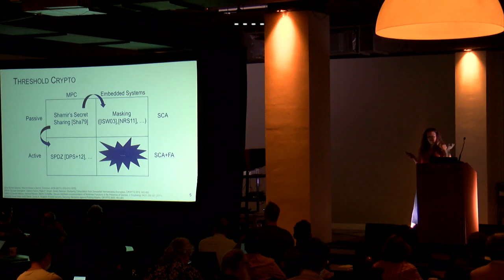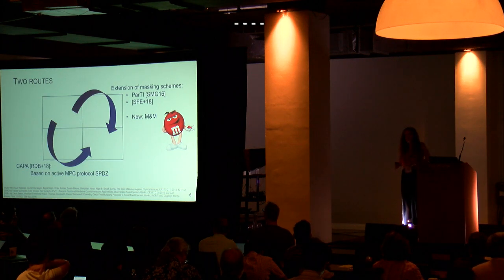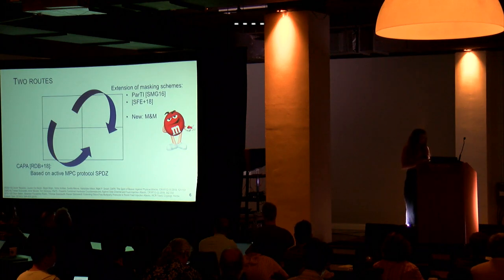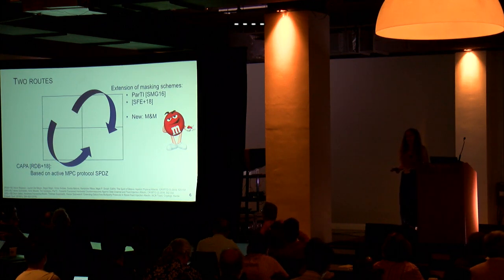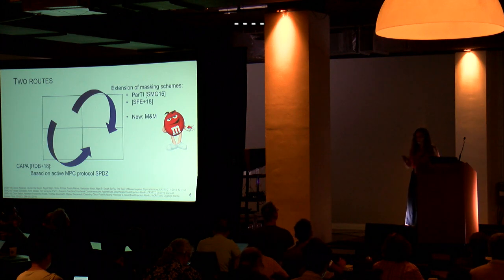I see two ways of getting where we want to get. The first is to take an actively secure MPC protocol and translate it to an embedded systems setting. This is what we did at Crypto 2018 with a scheme called Kappa. Kappa comes with very strong security guarantees but is also very expensive. The alternative is to take an existing masking scheme and extend it with fault countermeasures. In 2016 at Crypto there was Parti — threshold implementations extended with error-detecting codes. And last year at Chess there was a polynomial masking countermeasure extended with fault protection. Now I'm going to talk about MnM.